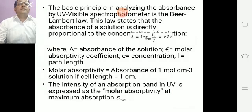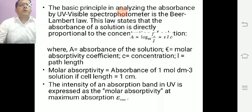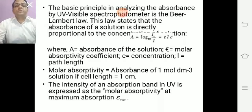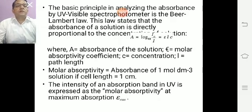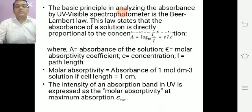The basic principle in analyzing absorbance by UV-visible spectrophotometer is the Beer-Lambert law. This law states that the absorbance of a solution is directly proportional to the concentration of the solution. The equation is: A = log₁₀(I₀/I) = ε·L·C, where A is the absorbance, ε is the molar absorptivity coefficient, C is the concentration, and L is the path length.